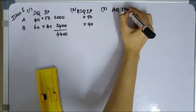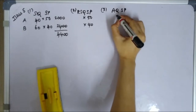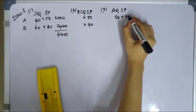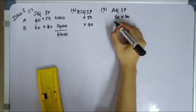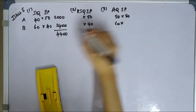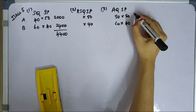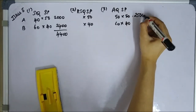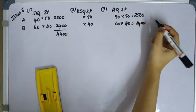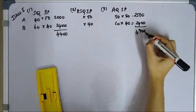Third column: AQ×SP. Actual quantity for A is 50, standard price is 50. For B, actual quantity is 60, standard price is 40. Calculating: I get 2,500 for A and 2,400 for B. Total AQ×SP is 4,900.